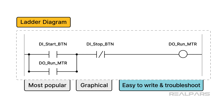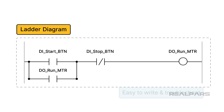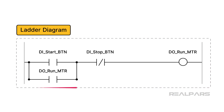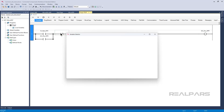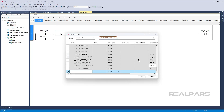Ladder Diagram is an ideal programming language for writing complex Boolean logic. Each line of code is called a rung, because it resembles a rung on a physical ladder. Programming is done by adding instructions and program elements to a rung.